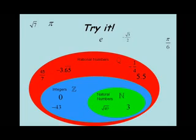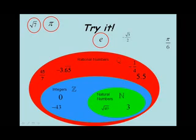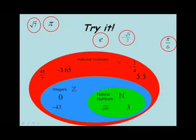We look at the numbers that are left and see the square root of 7, pi, e, negative square root of 3 over 2, and pi over 6. None of these can be written as a terminating decimal or a repeating decimal — they're infinite, non-repeating decimals if we try to write them in decimal form. Therefore, all five of these are examples of irrational numbers.